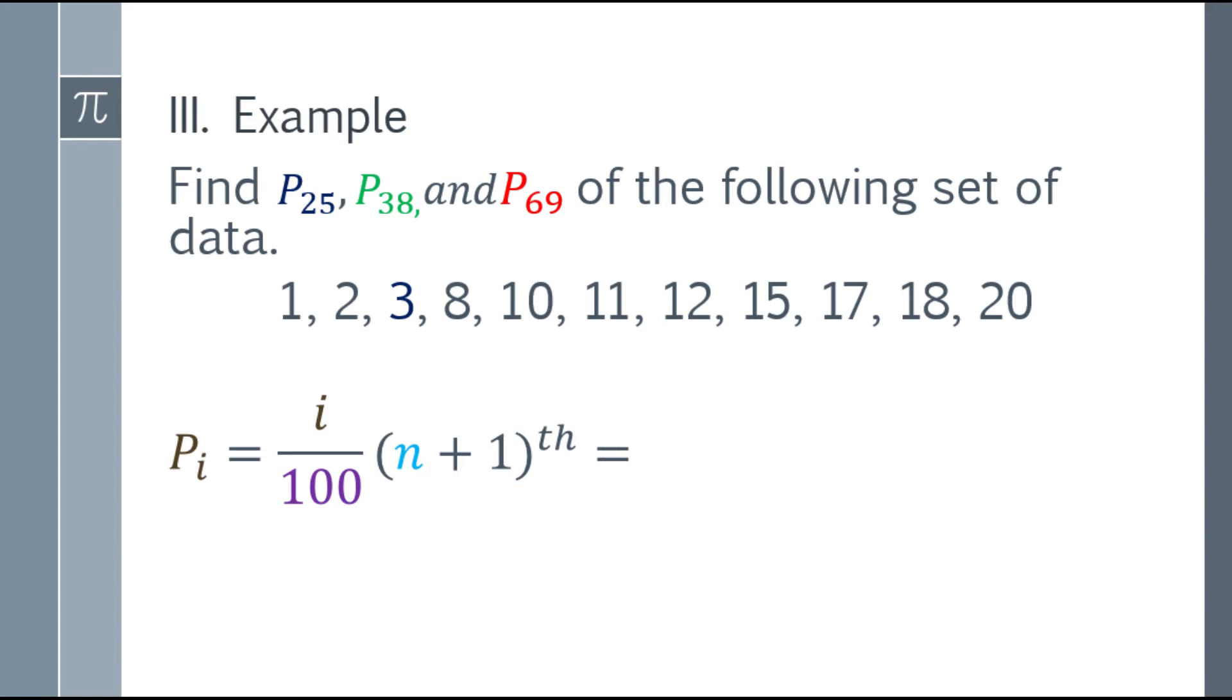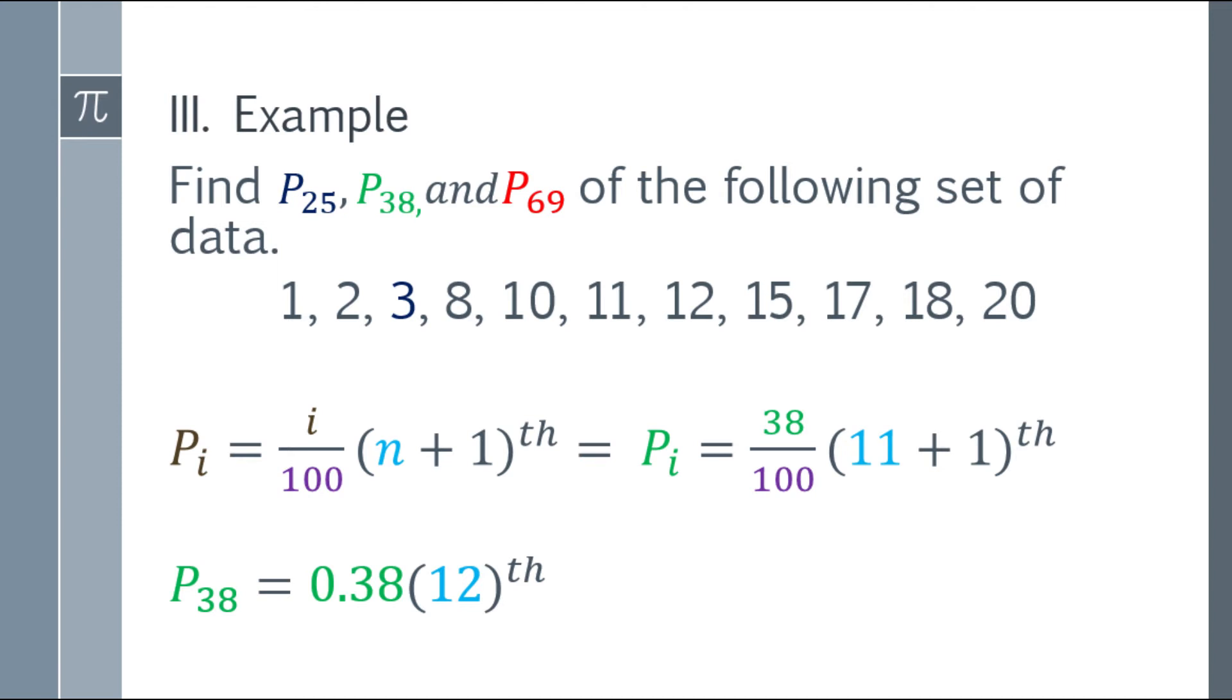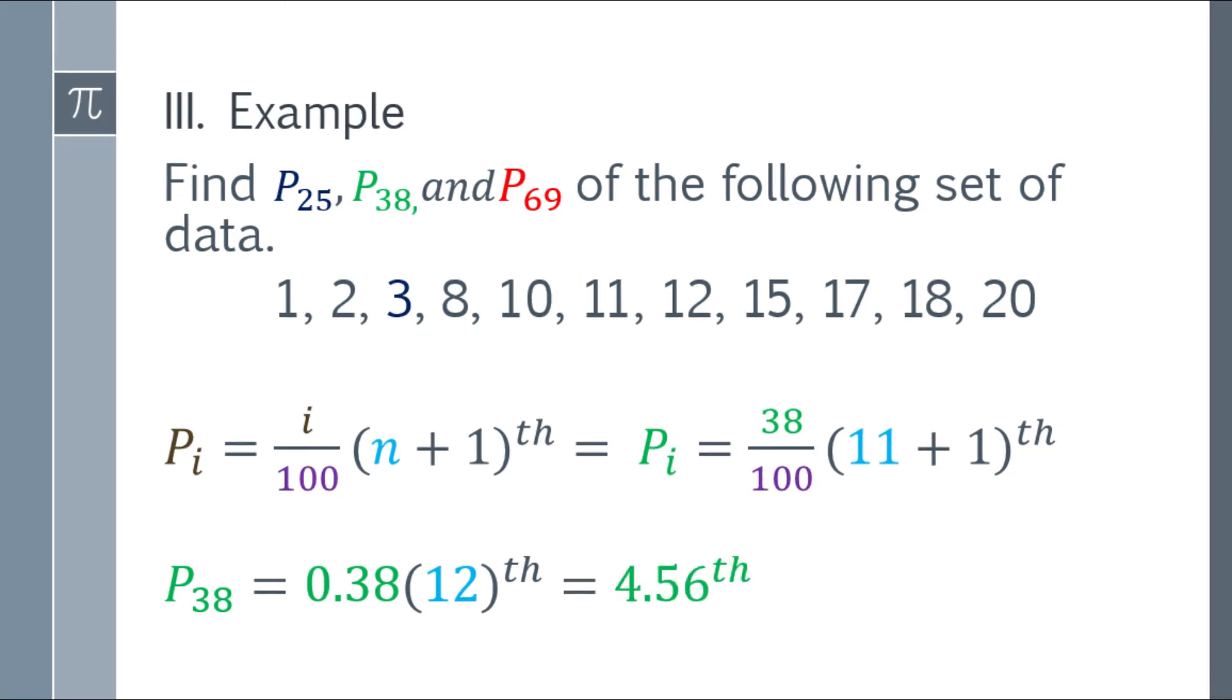Let's go to P 38. Lagay ko agad yung formula at lagay na natin yung mga values para makuha P 38. Ang i natin that will be 38. Ang denominator will be 100. Sa parentheses naman, same naman din. Kung ano yung ginawa mo kanina? 11 plus 1. Kasi 11 yung number of samples natin. Simplify natin. If you have 38 divide mo ng 100, that will be 0.38. At ang solve ng parentheses, that will be 12. Simplify in murder. And we have 4.56.